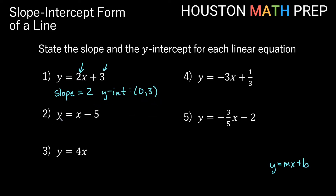Here we look at y equals x minus 5. If you think about just x, that's the same as having 1x. So m is going to be 1, and our slope is equal to 1 in this case.